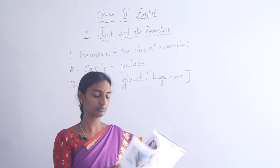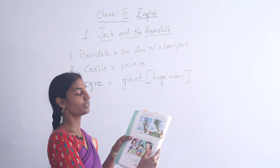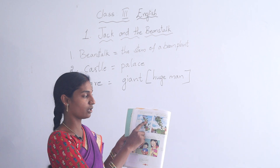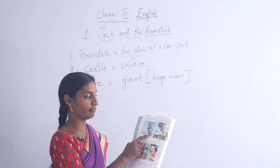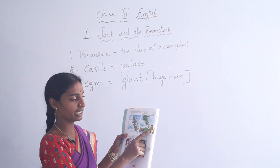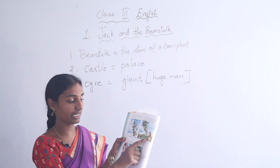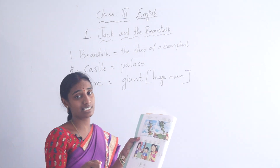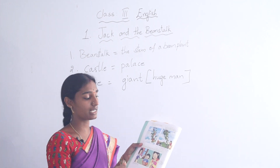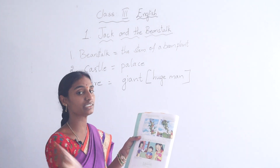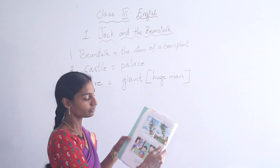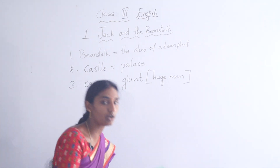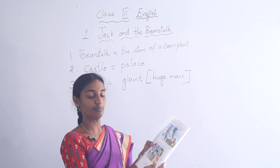Open the next page — page eight. When they were both coming down, the ogress was also coming down along with them. Jack had an idea. He took the axe — you know, axe is for cutting down plants — and he quickly cut down the creeper. The ogre fell down to the ground and burned into smoke.